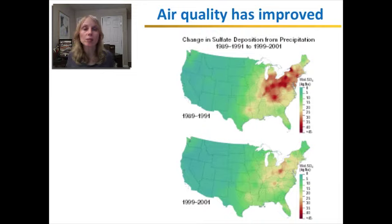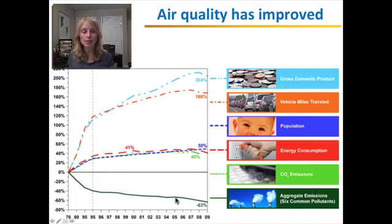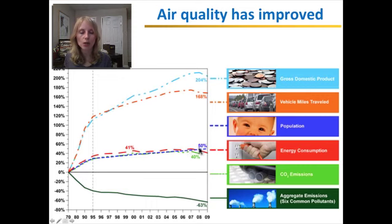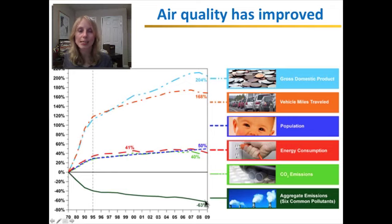Our air quality has fortunately improved significantly in the last several decades. Here's a map of the United States showing sulfur dioxide deposition — in the years 1989 through 1991, the orange and red areas show the most deposition, and by 1999 to 2001 air quality had already improved. EPA data shows that while the U.S. population grew 50% since 1970 and vehicle miles traveled increased 168%, the combined emissions of the six most common air pollutants actually decreased by 63%.